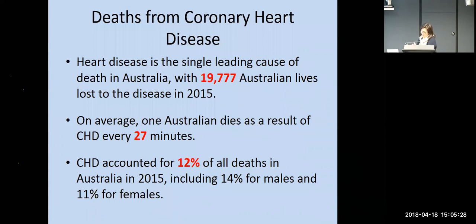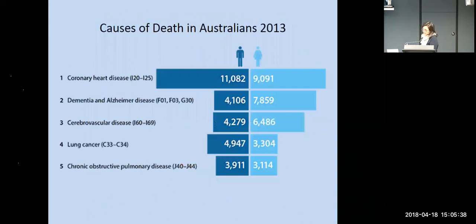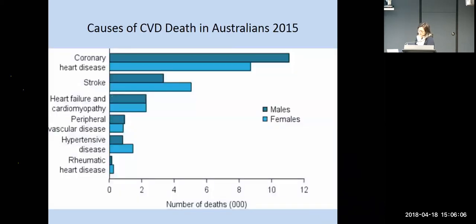Coronary heart disease accounts for about 12% of deaths, being higher in men than women. If you compare coronary heart disease to other leading causes of death in Australians, particularly for men it's way ahead compared with dementia, stroke, lung cancer and COPD. For women the differences aren't as marked, but it's still number one. Compared with other cardiovascular diseases, it's still way out in front compared with stroke, heart failure and other vascular diseases.